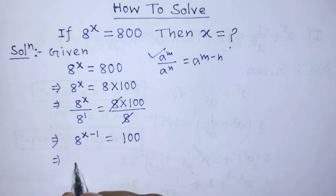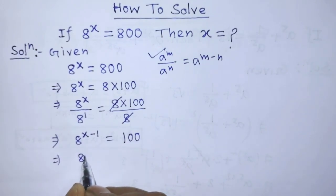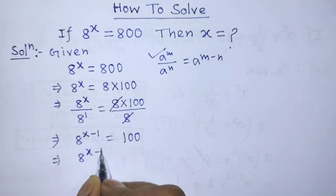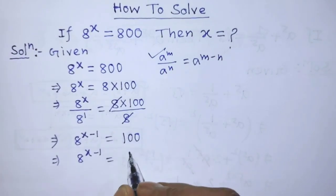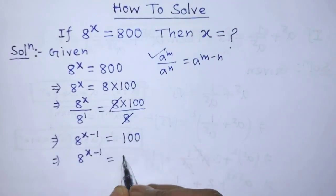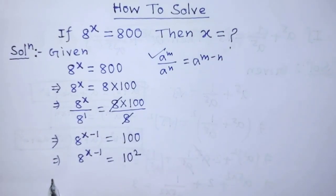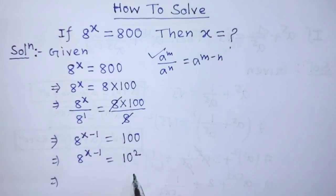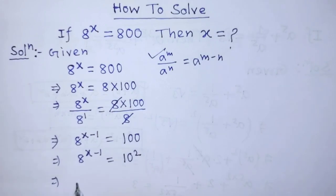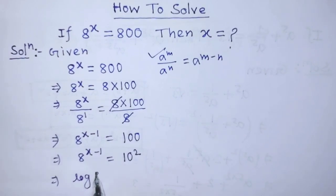So after that, on the left hand side we again write 8 to the power x minus 1 is equal to — in place of 100 we can write 10 to the power 2. To find the value of x from this equation, we have to take log on both sides. After taking log on both sides, we write on the left hand side: log of 8 to the power x minus 1...